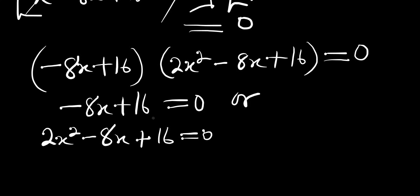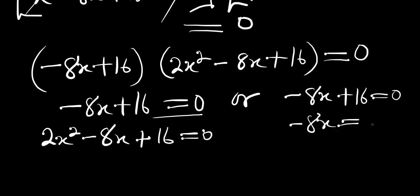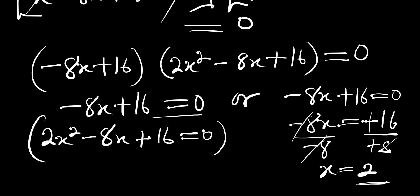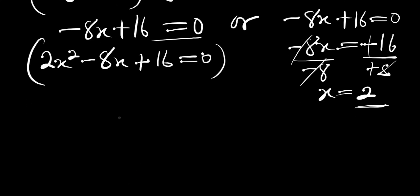From the first equation, negative 8x plus 16 equals zero. Dividing both sides by negative 8, x equals 2. So x equals 2 is one of the solutions. Now we are going to solve the quadratic equation to find the other solutions.